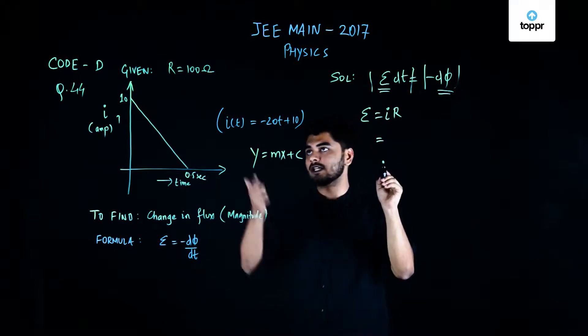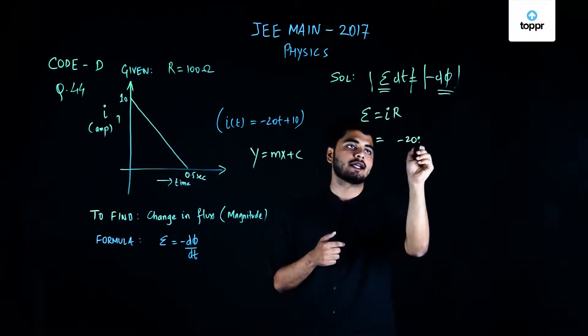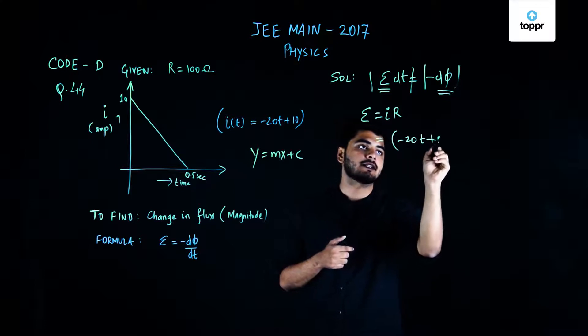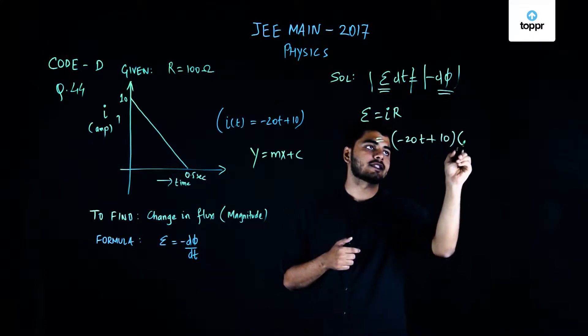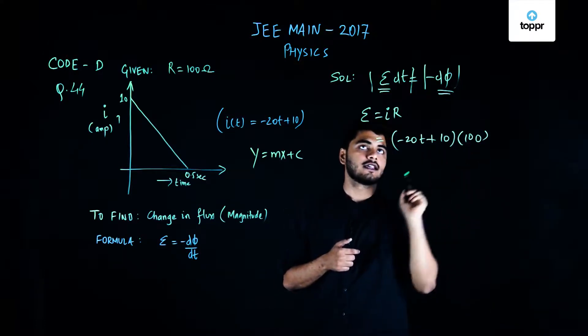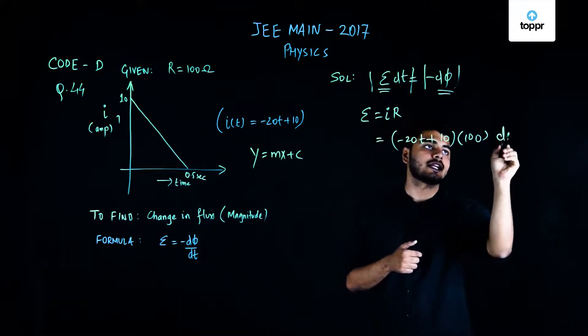So i as we know is a function of t which equals minus 20t plus 10 times r which equals 100 in this case, and that multiplied by dt.